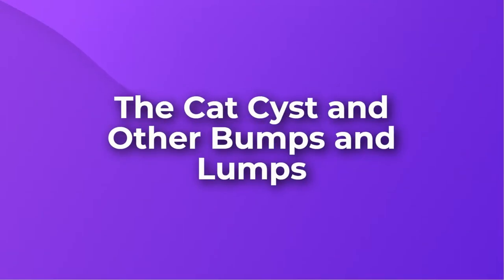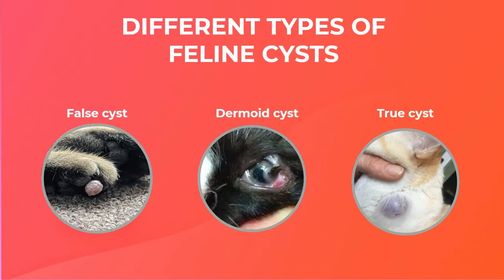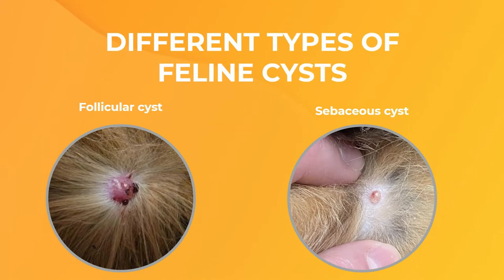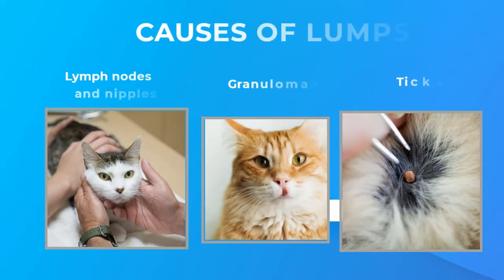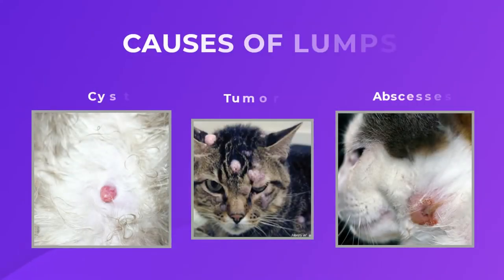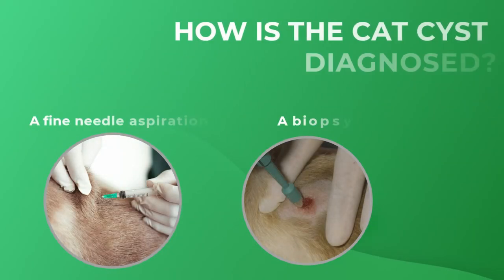The cat cyst and other bumps and lumps: different types of feline cysts including false cysts, dermoid cysts, true cysts, follicular cysts, and sebaceous cysts. Causes of lumps include lymph nodes and nipples, granulomas, ticks, cysts, tumors, and abscesses.